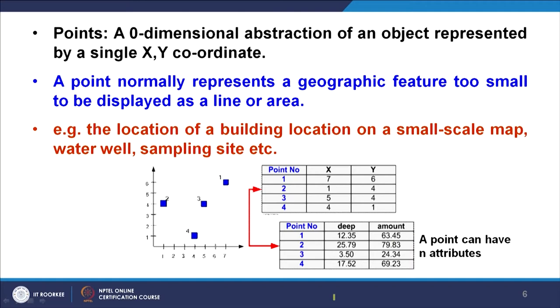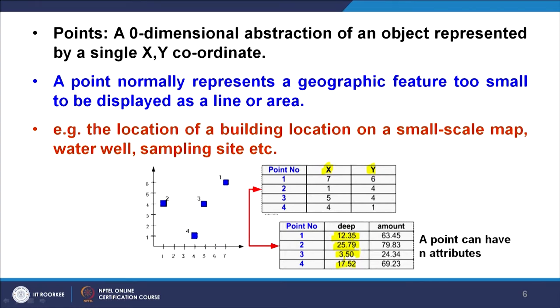One example is shown here: there are 4 points shown in an x-y coordinate system. For simplicity we are not showing geographic coordinates, but in software demonstration I would show geographic coordinates too. These tables shown are nothing but attribute tables. So for points 1, 2, 3, 4, there is one pair of x and y. I can have a separate table where against point 1 there is the depth of a well, and point 2, 3, and 4. If I have n number of points, I will have n number of rows, and theoretically n number of columns to store as much information as possible against a single point.